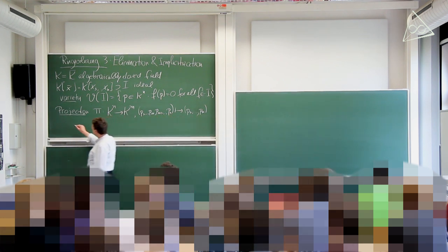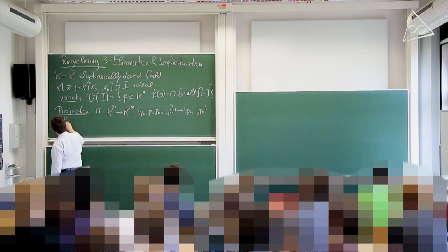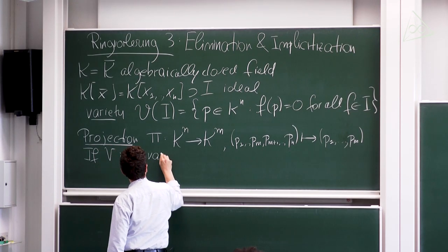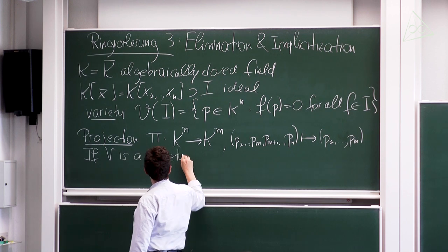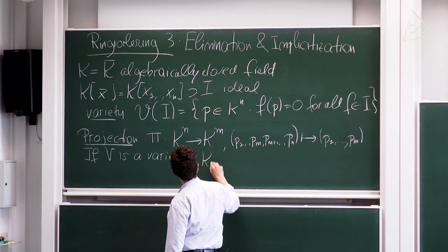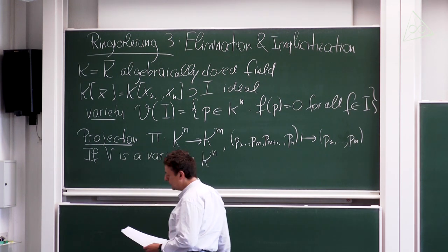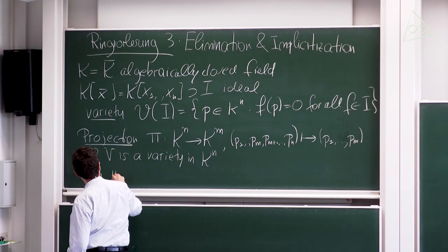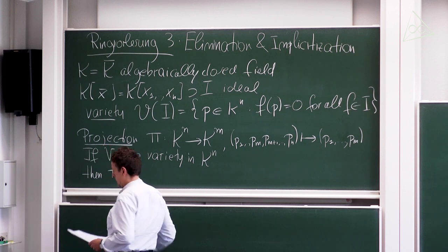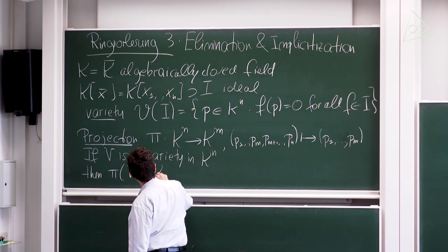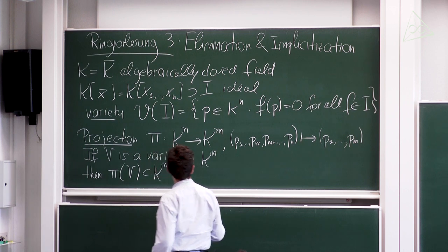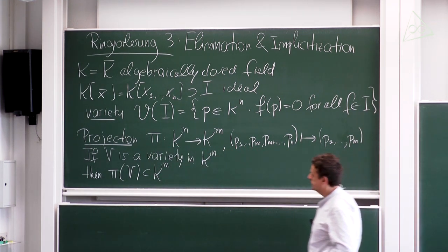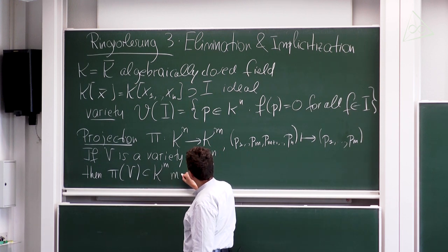The first observation is: if V is a variety in kⁿ, you would like it that the projection is also a variety. But π(V), the image of V under the map, is generally not a variety — it may not be a variety.